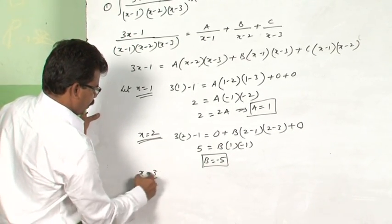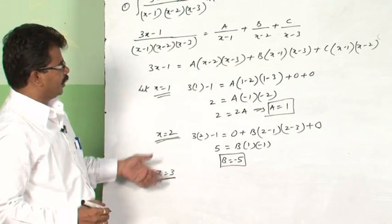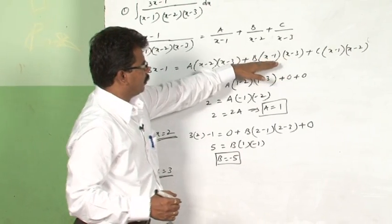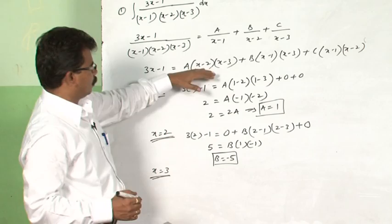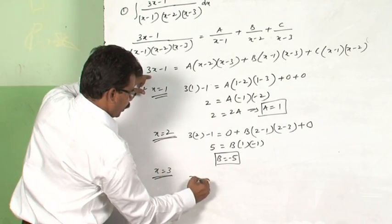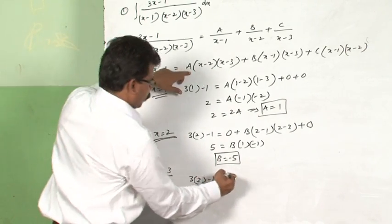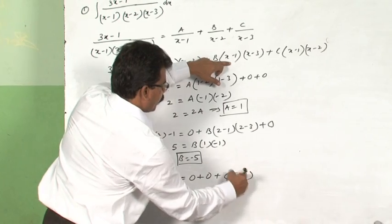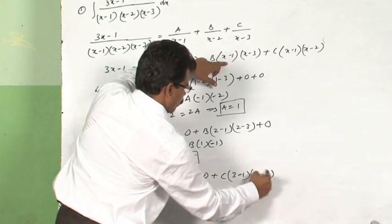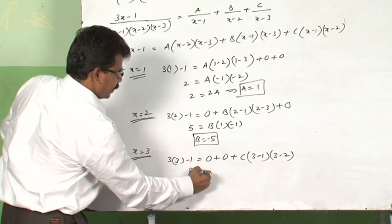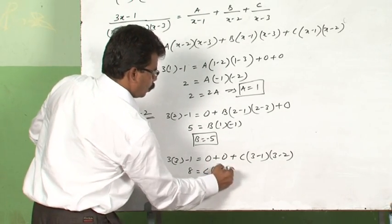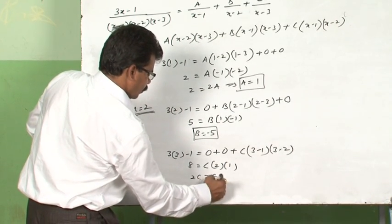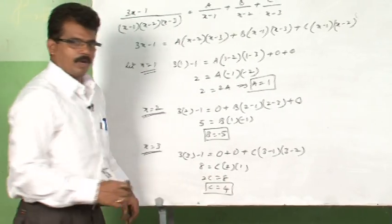Let x = 3 to eliminate the A and B terms, since (x − 3) appears in those terms. The LHS becomes 3(3) − 1 = 8. The remaining term gives C(3 − 1)(3 − 2) = C(2)(1) = 2C. Therefore 2C = 8, so C = 4.